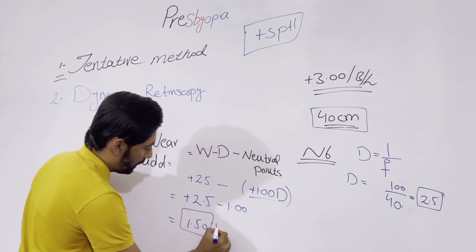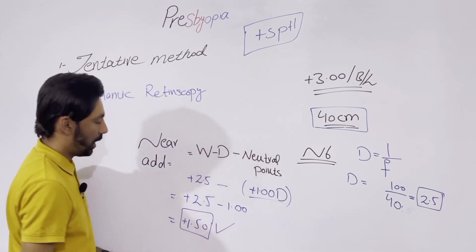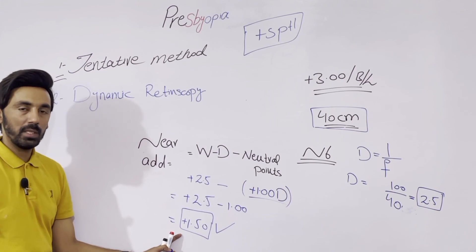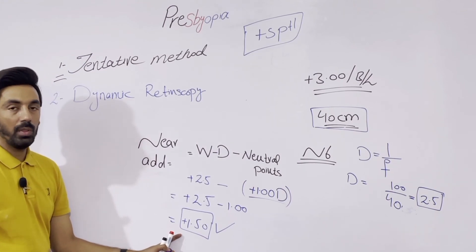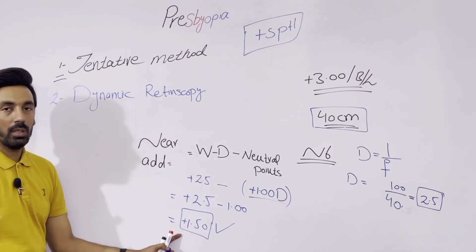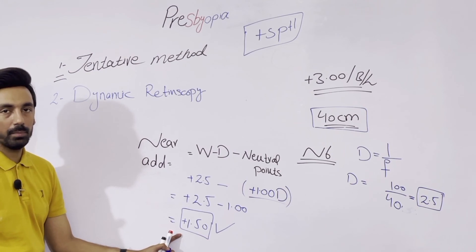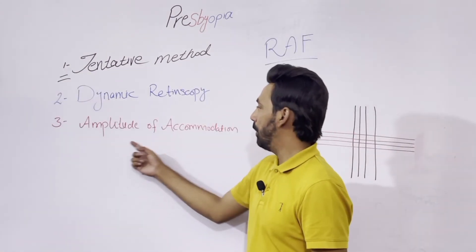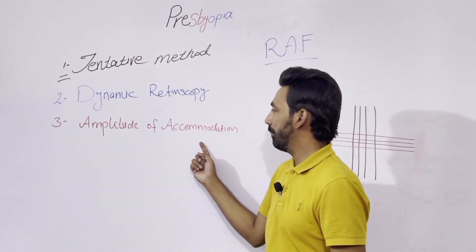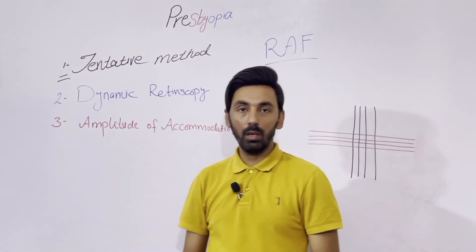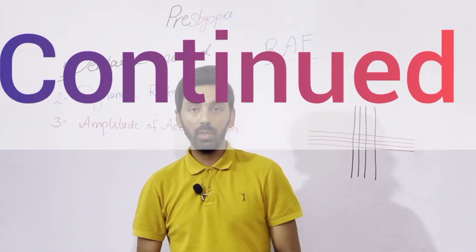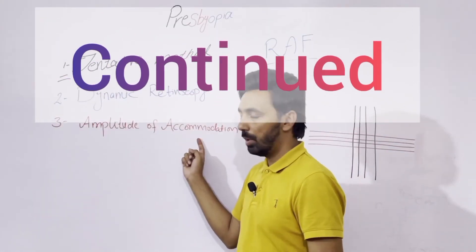So plus 1.50 is our near add for presbyopic correction using dynamic retinoscopy. Our third method involves the amplitude of accommodation — how we can find the near add using the amplitude of accommodation — which will be discussed next.